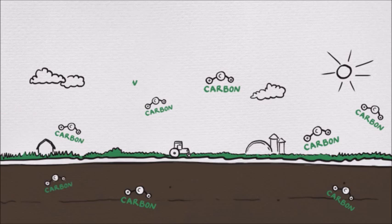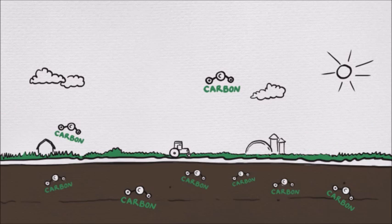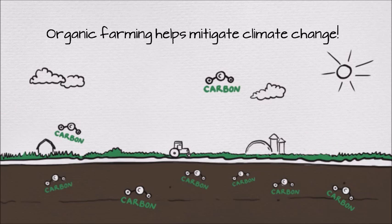Each carbon molecule in the ground is one that isn't in our atmosphere, which means organic farming even helps to mitigate climate change.